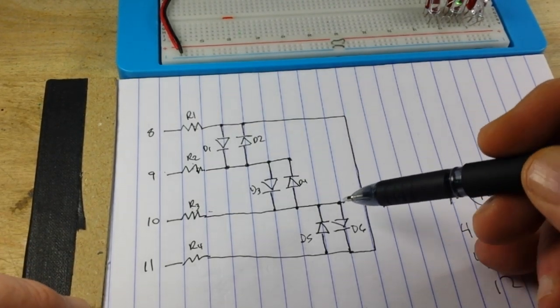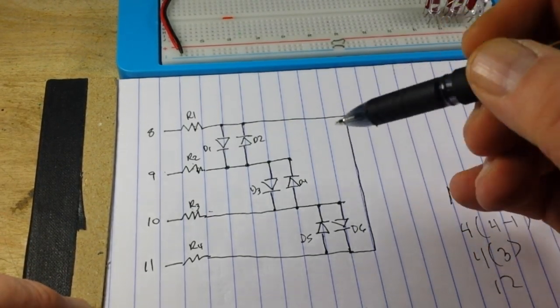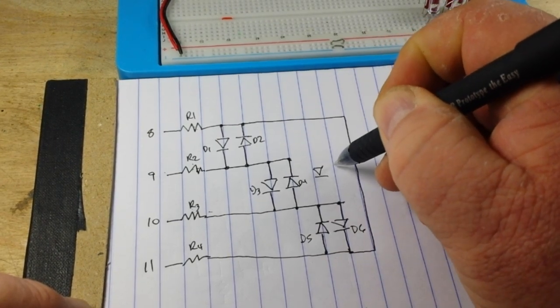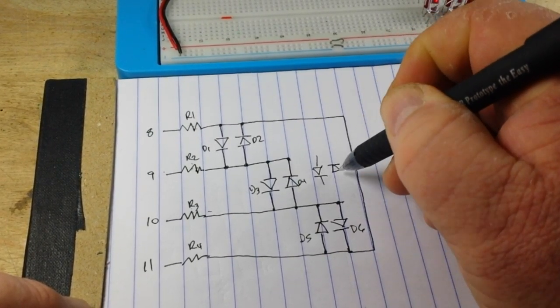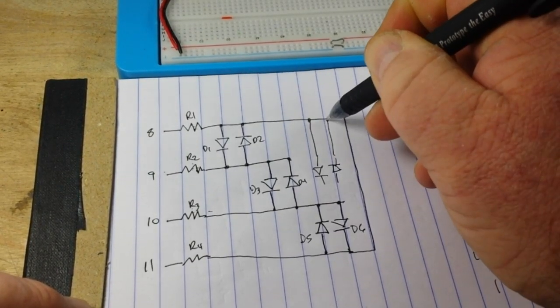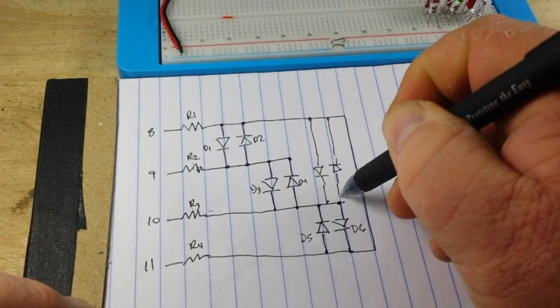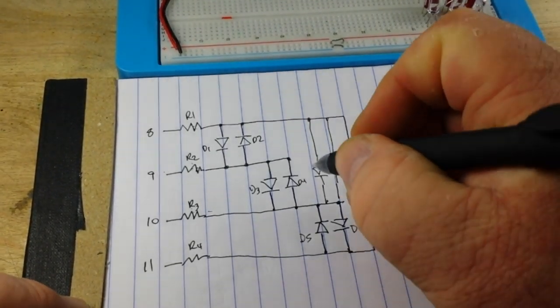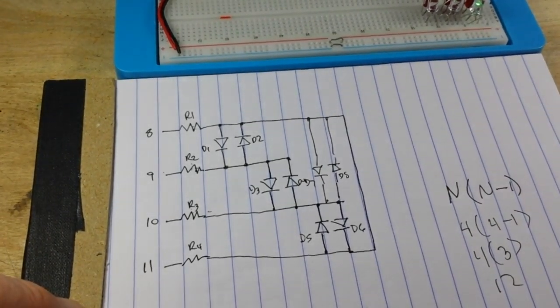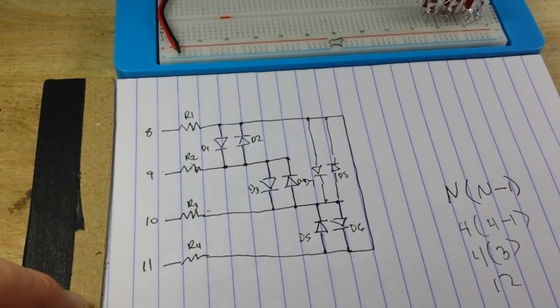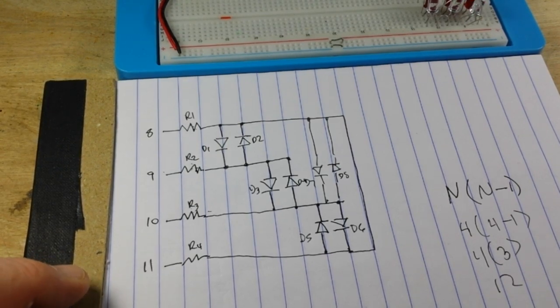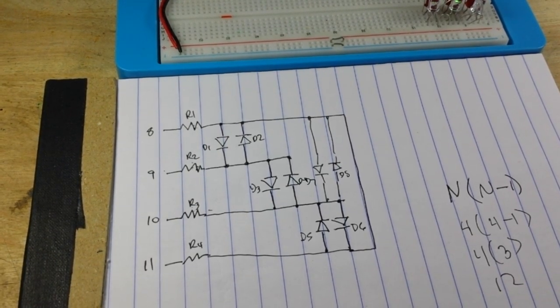Now, if you want to add more, there's D5, there's D6. Say you want to add D7 and D8. Well, they just go between 1 and 3 like that. And then you can add 9 and 10, which go between pins 2 and 4. Let me draw it out for you.